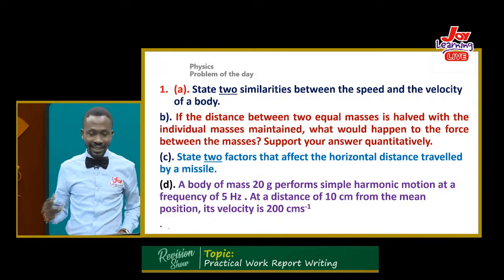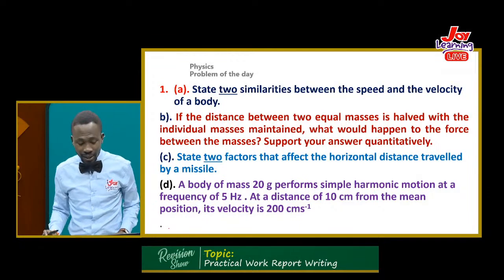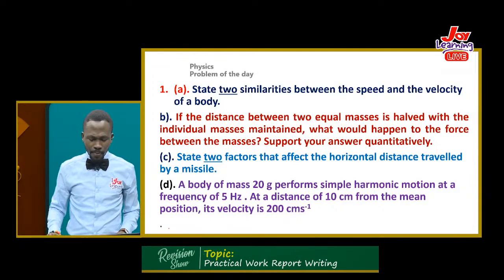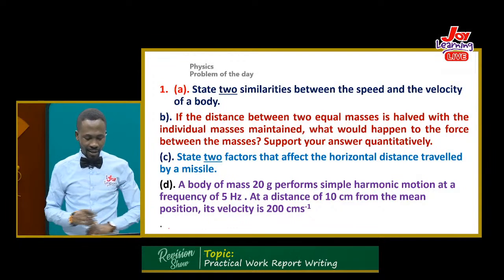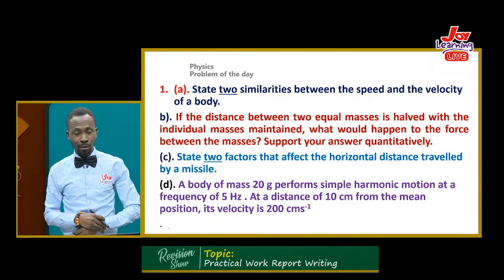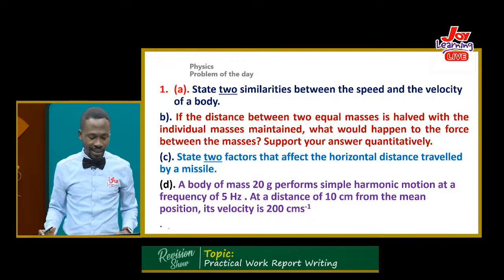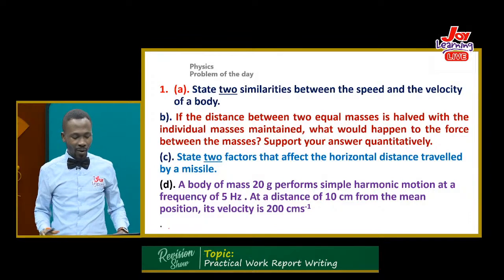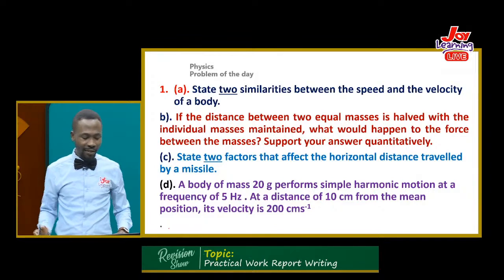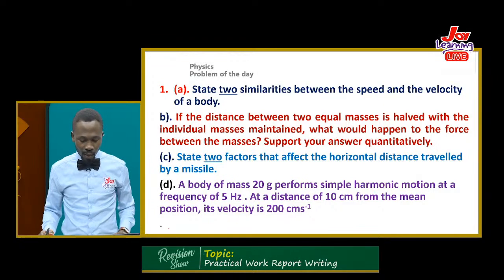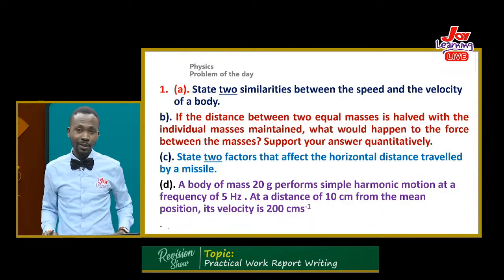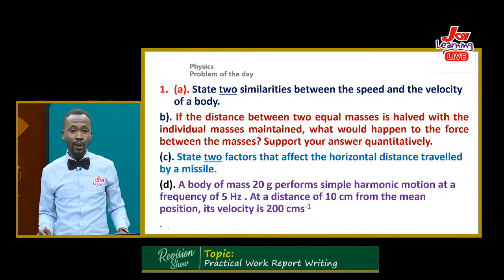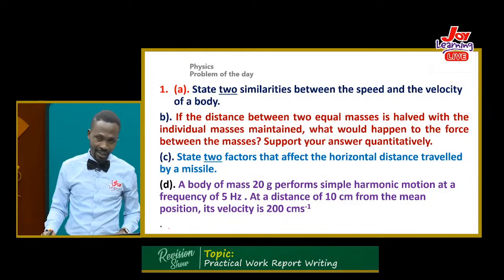Question 1A says: state two similarities between the speed and the velocity of a body. Then B says: if the distance between two equal masses is halved, with the individual masses maintained, what would happen to the force between the masses? Support your answer quantitatively.